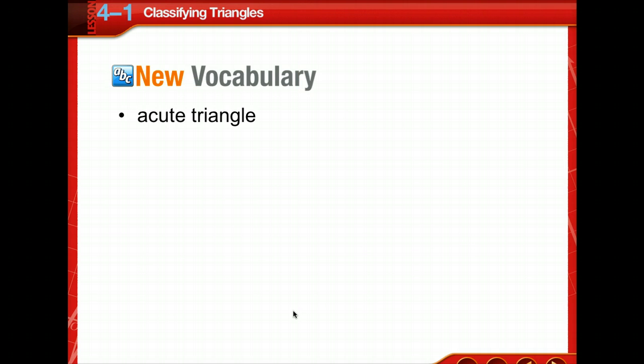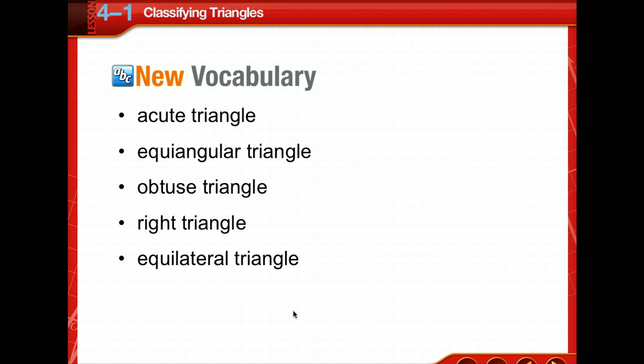Seven new vocabulary words, or maybe not so new. Acute triangle, equilangular triangle, obtuse triangle, right triangle, equilateral triangle, isosceles triangle, and scalene triangle.